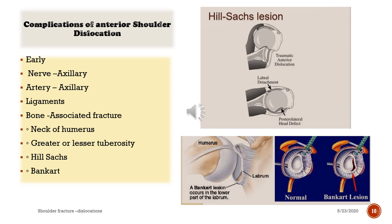Complications of anterior shoulder dislocation — early complications include: axillary nerve injury, axillary artery injury, ligament injuries, associated bone fractures (for example, neck, greater or lesser tuberosity), Hill-Sachs lesion, and Bankart lesion.